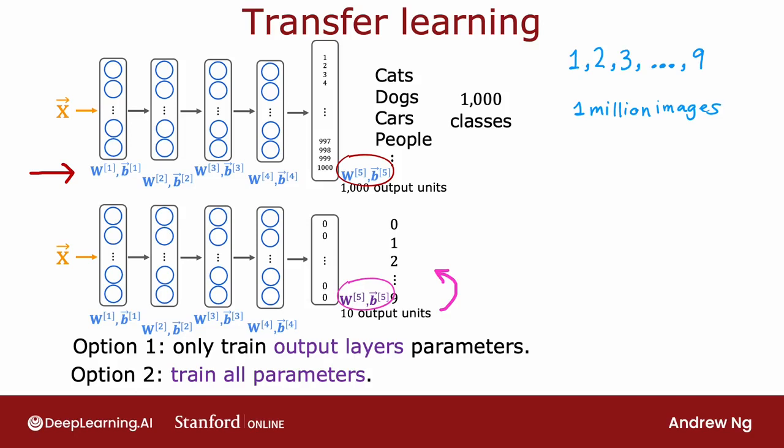This algorithm is called transfer learning because the intuition is by learning to recognize cats, dogs, cars, people, and so on, it will hopefully have learned some plausible sets of parameters for the earlier layers for processing image inputs. And then by transferring these parameters to the new neural network, the new neural network starts off with the parameters in a much better place so that with just a little bit of further learning,